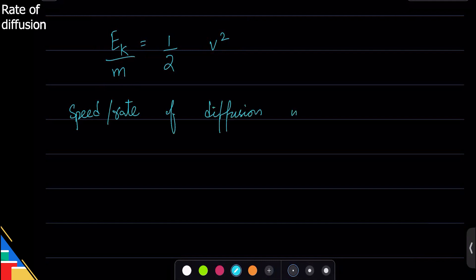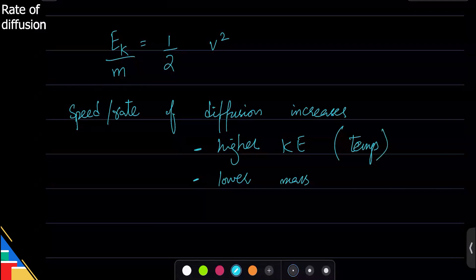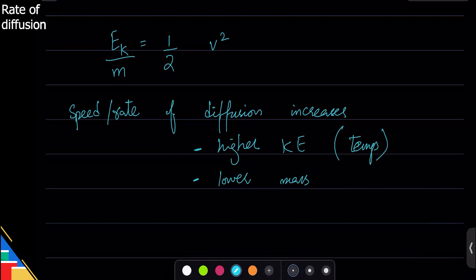Speed or rate of diffusion increases if you have higher kinetic energy and lower mass. Where does kinetic energy come from? Temperature. Higher temperature means higher kinetic energy, things will move faster. So when you heat something up it moves faster, it diffuses faster.